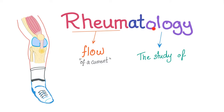Rheumatology is the scientific study of flow or current, because back in the day they thought there were some fluids floating around causing joint disease all over the body. It's not actually fluids — it's more like antibodies — but it's kind of close. So we're studying rheumatology, which is a wrong name before we begin anything.